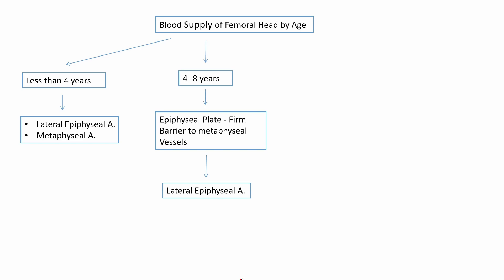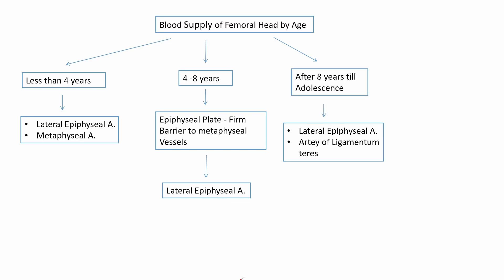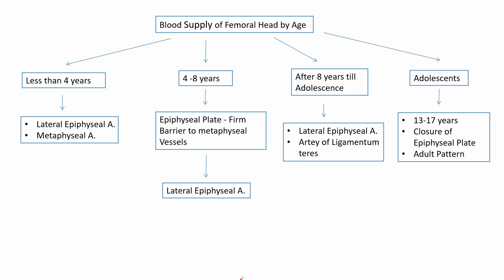In the 4 to 8 year age group, any insult to the lateral epiphyseal arteries can lead to Perthes disease, and this is the most common age for Perthes disease. After 8 years until adolescence, the artery of ligamentum teres gives an increased contribution to the blood supply of the femoral head, somewhat restoring the dual blood supply. At adolescence, that is 13 to 17 years, there is closure of the epiphyseal plate and the adult pattern of blood supply develops.